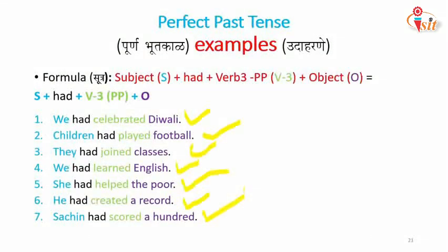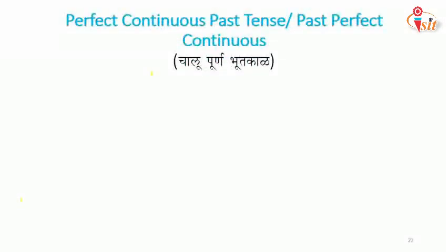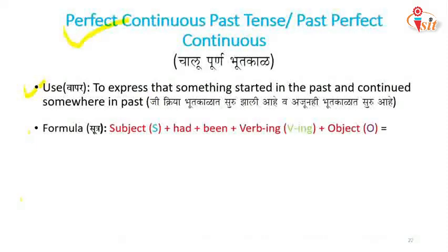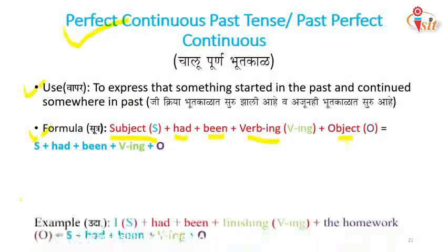Let's move on. The next tense is past perfect continuous tense. Let's quickly look at the use: to express that something started in the past and continued somewhere in the past. The formula is: subject + had + been + V-ing + object.